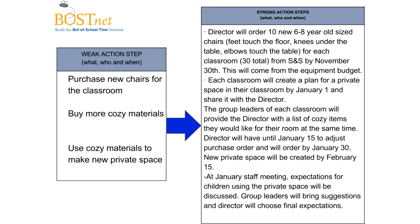So instead of just saying purchase new chairs for the classroom, we're going to get very specific and say the director will order 10 new six-to-eight-year-old sized chairs for each classroom — 30 total — from SNS, which is a website, by November 30th. This will come from the equipment budget. So it's specific about who is going to do it, what size chairs they are, how many chairs there will be, and when it needs to get done.